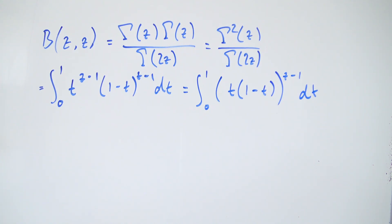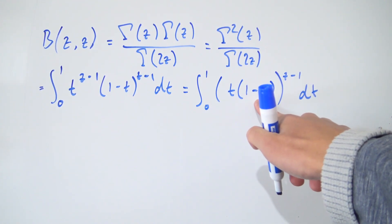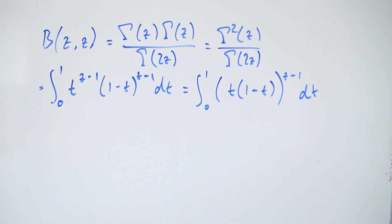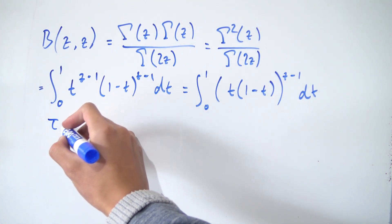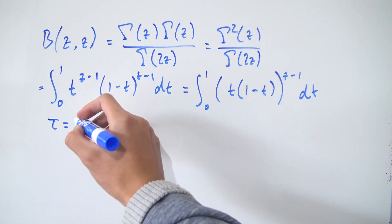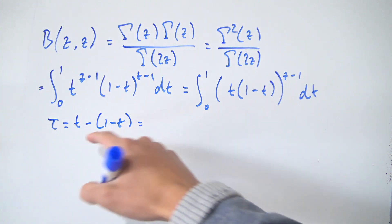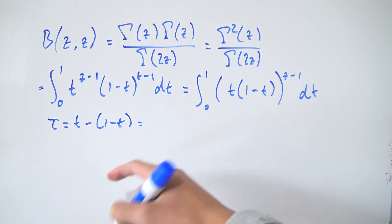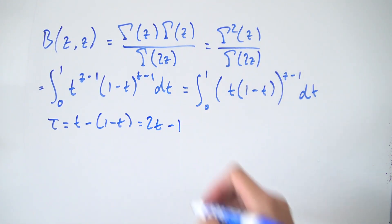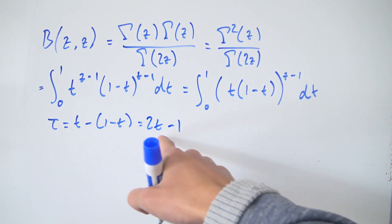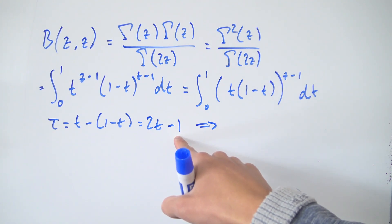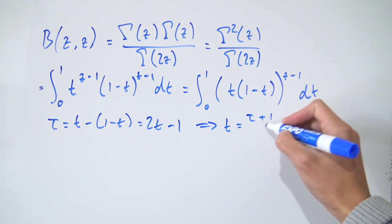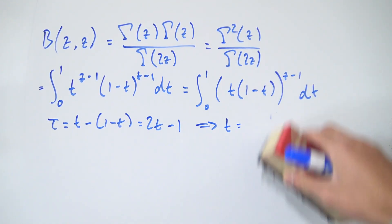Now I want to make a substitution to transform this into something more symmetrical, and also turn the bounds into a symmetric interval. I'm going to introduce a new variable tau, defined as t minus (1 minus t), which simplifies to 2t minus 1. Rearranging to solve for t: adding 1 to both sides and dividing by 2 gives t equals (1 plus tau) divided by 2.